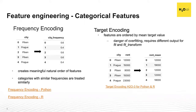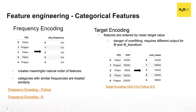Frequency encoding encodes based on the frequency distribution within the categorical column. It preserves information — for example, Pilsen appears 3 times out of 5, so it shows up 60% of the time and is assigned a value of 0.6, while Prague is assigned 0.4. This preserves the representation of the distribution in the field. It can be really good for nominal features, creates meaningful natural ordering, and categories with similar frequencies are treated similarly.